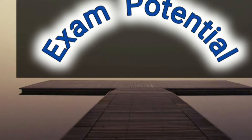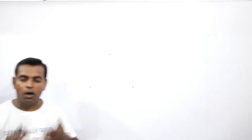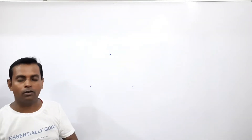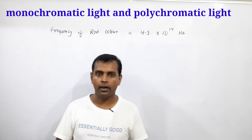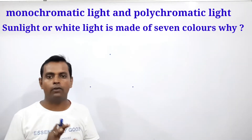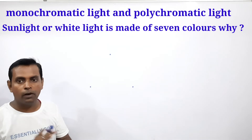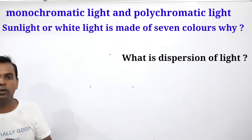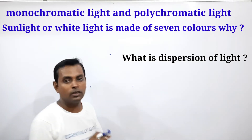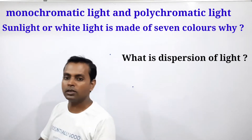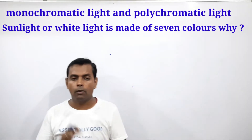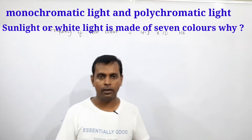Hello students, myself Rahul Kumar welcomes you in this video tutorial. Today I will take you once again to the world of color where I am going to explain what is monochromatic light and polychromatic light, the secret of the rainbow, and why white light splits into seven colors when passed through a prism. You are going to have lots of information today, so keep watching till the end.